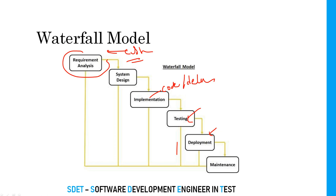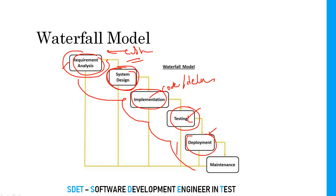This is a very old and classical approach, but there are many issues with this model. Each phase depends on the previous phase's document. If you want to design, you need the requirement document first — unless requirements are clear, complete, and frozen, we cannot proceed to the next phase. Similarly, until design documents are ready we cannot start coding, and until coding is complete we cannot test.